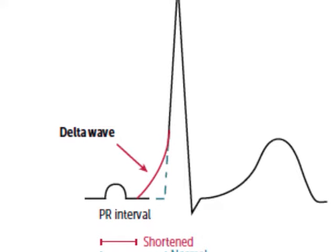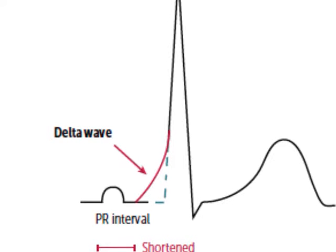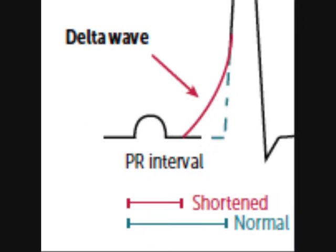This Bundle of Kent is present in about 0.12 to 0.2% of the population. If you see the ECG coming up right now, that's the arrow pointing to the delta wave. The PR interval is characteristically shortened.